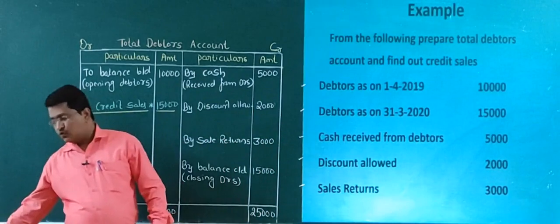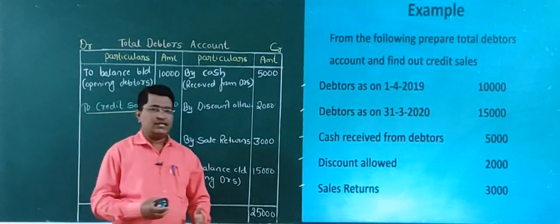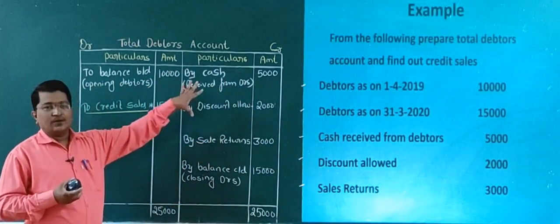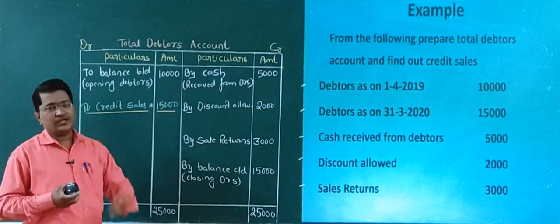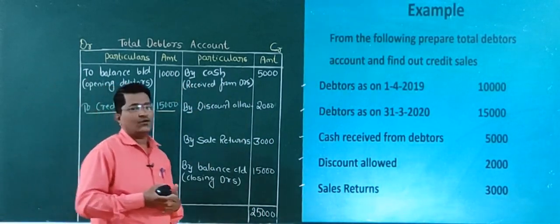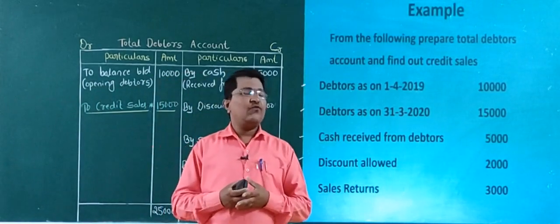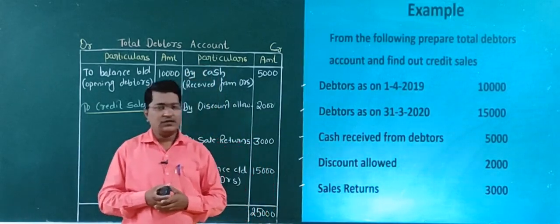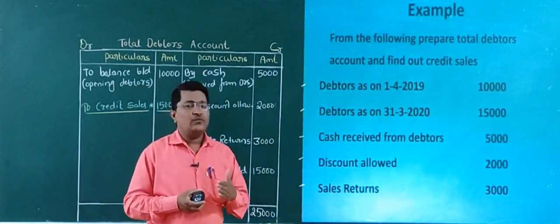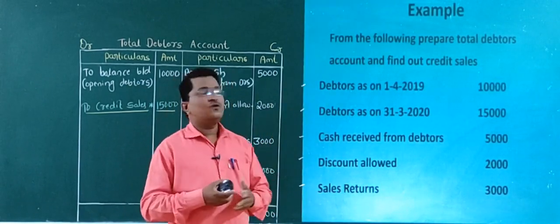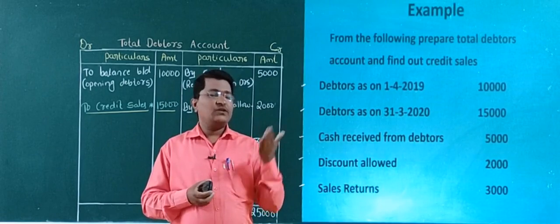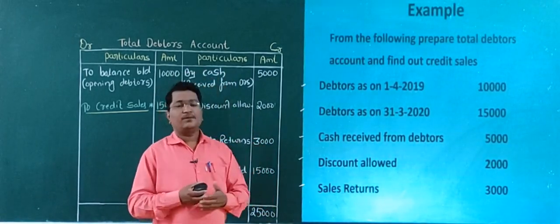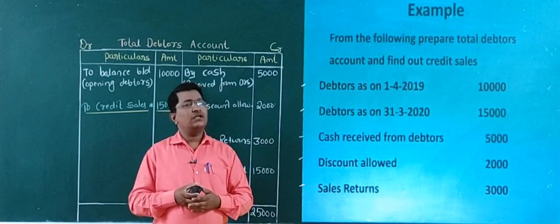Now you understand how to prepare the Total Debtors Account and find out the credit sale. By using the format, if you solve this problem, it becomes very easy — debit side amounts on one side, credit side amounts on the other. In the next class, we move with another problem on the same Total Debtors Account, where we find out cash received from debtors.